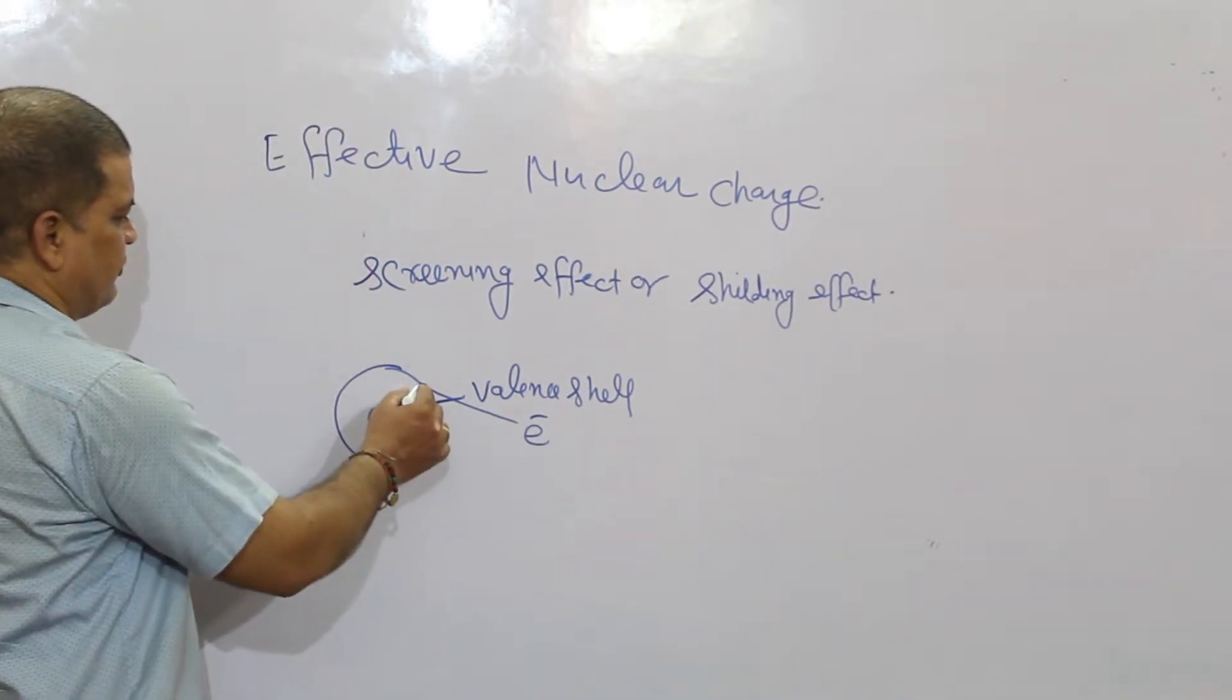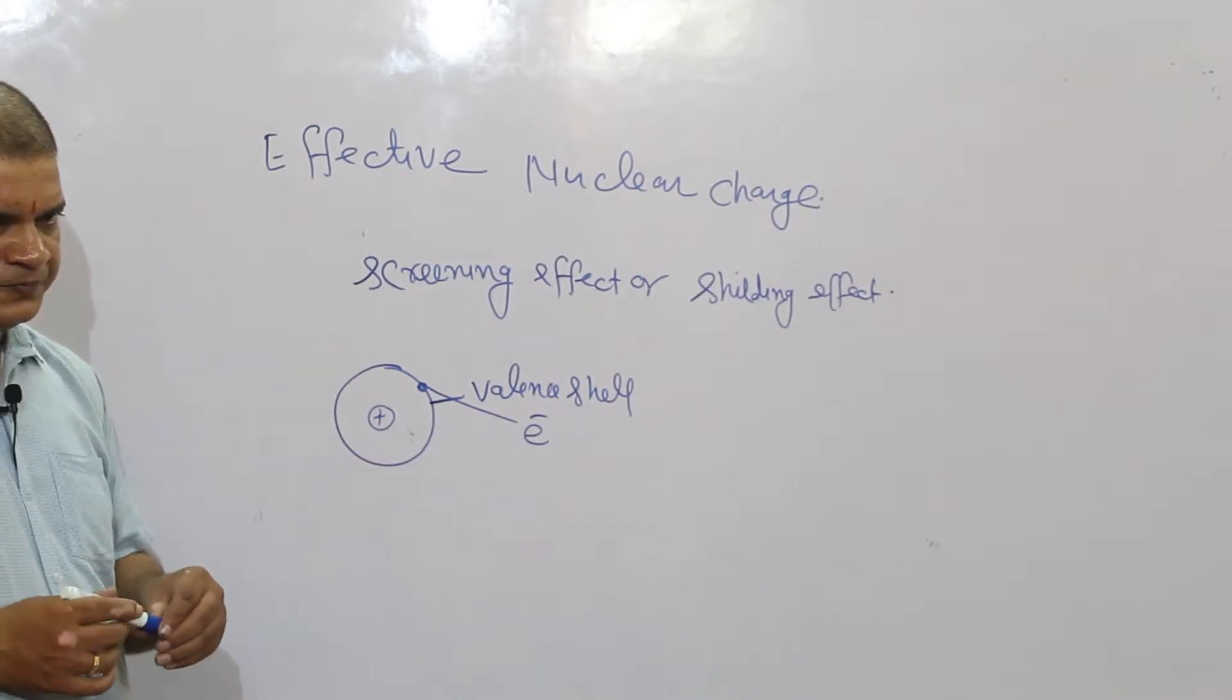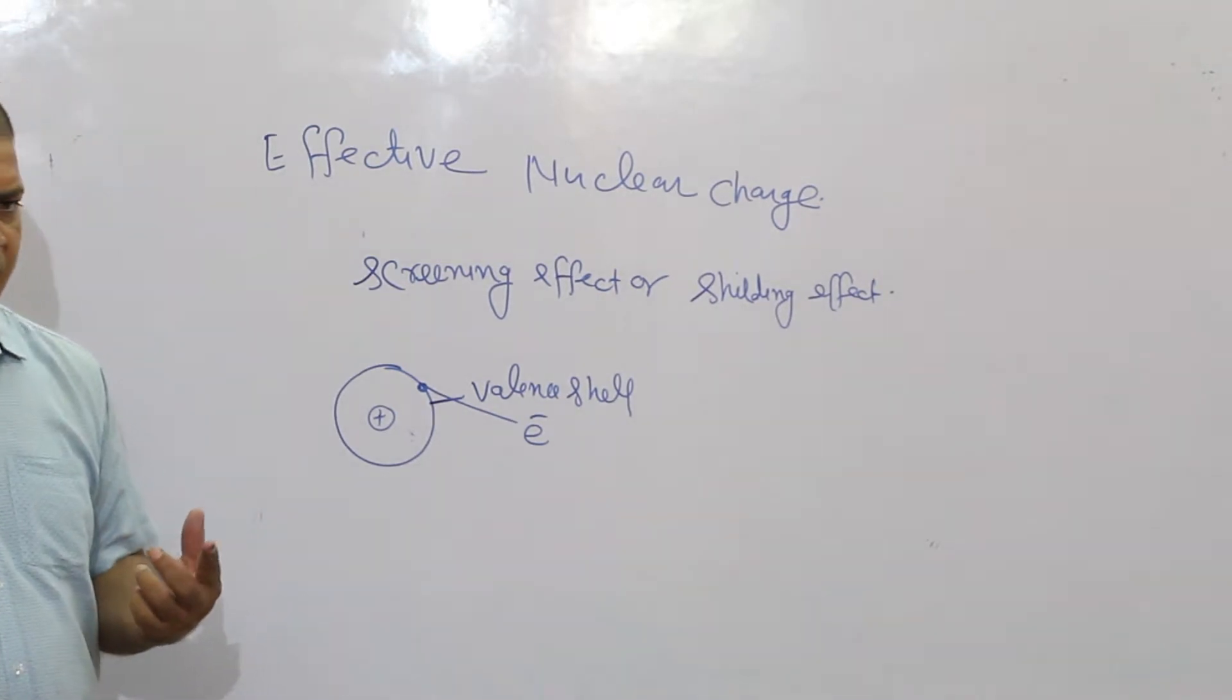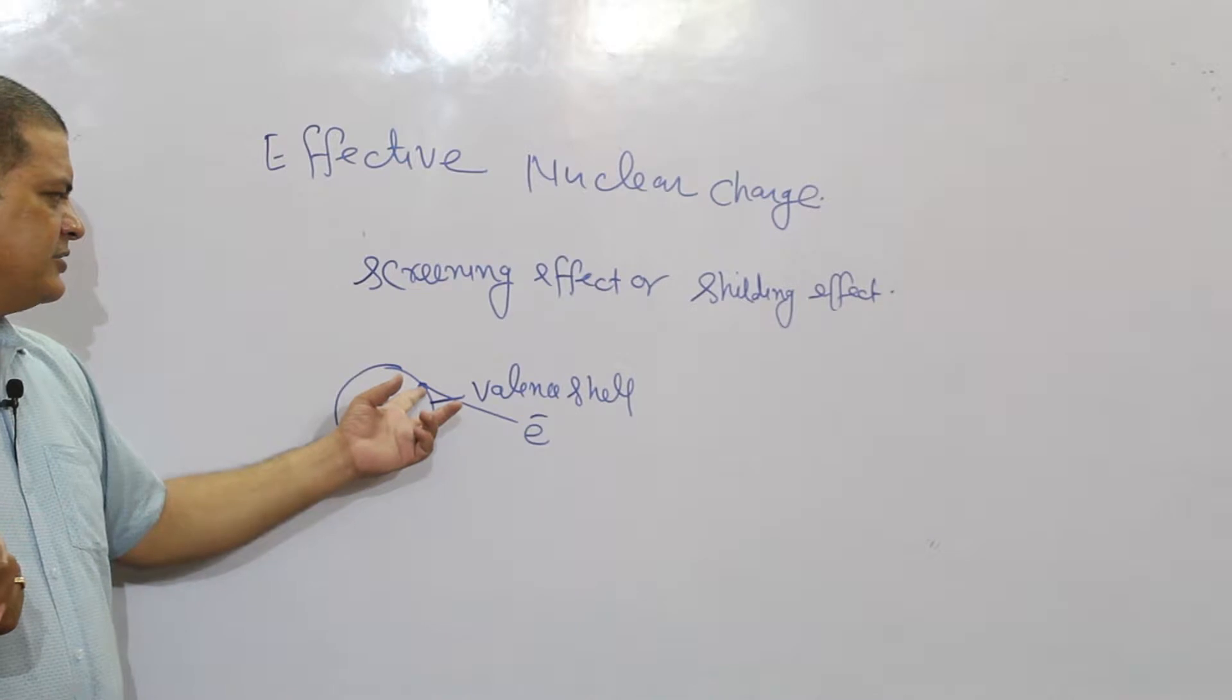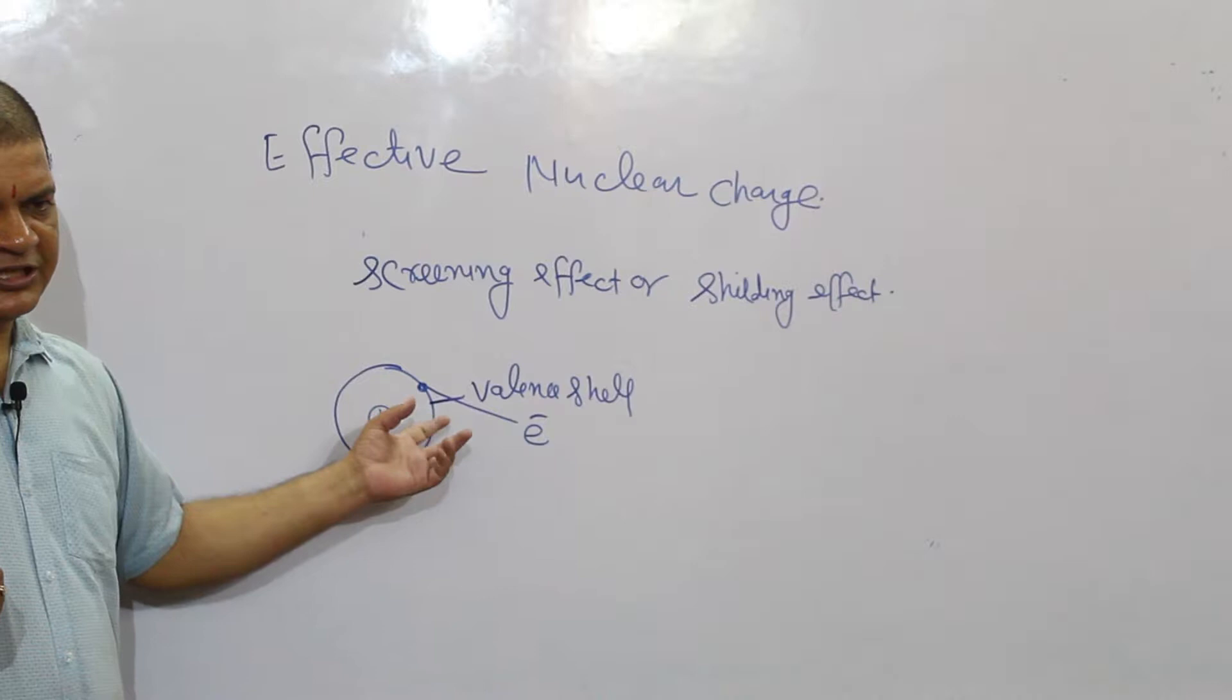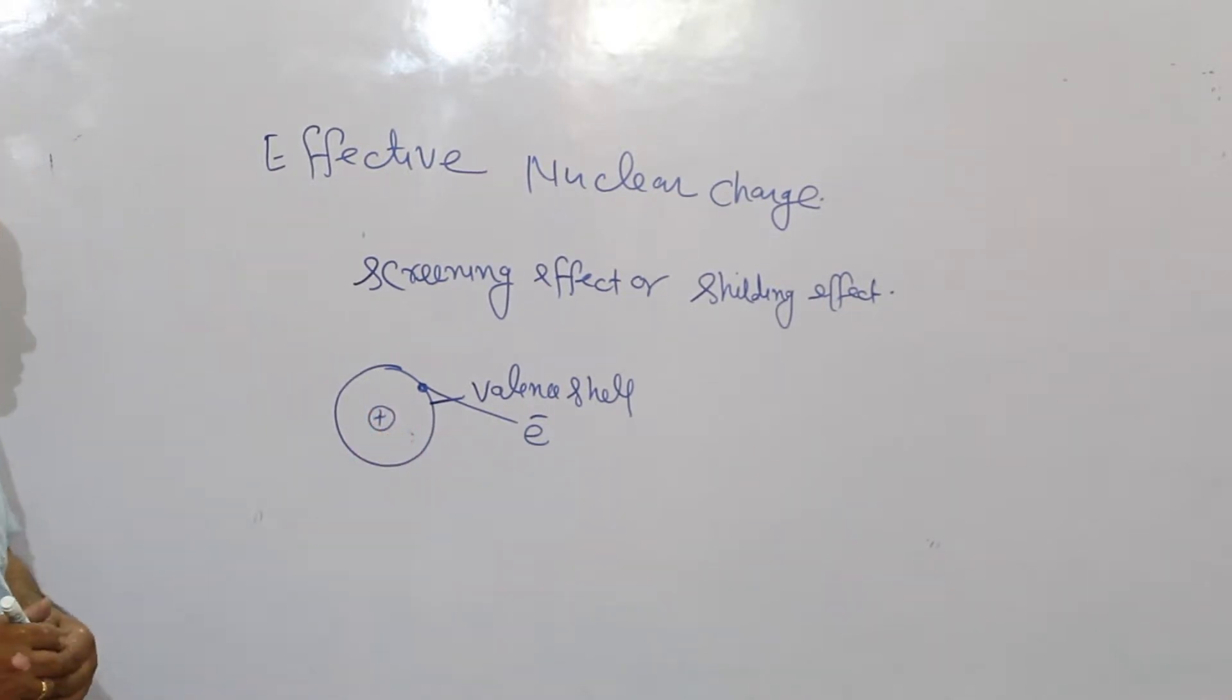What attracts an atom? There is an attraction. This force of attraction acts from all sides. Assume that this is the nucleus. Here you have a shell, and here you have a shell, and here you have a shell. In the valence shell, you have electrons.